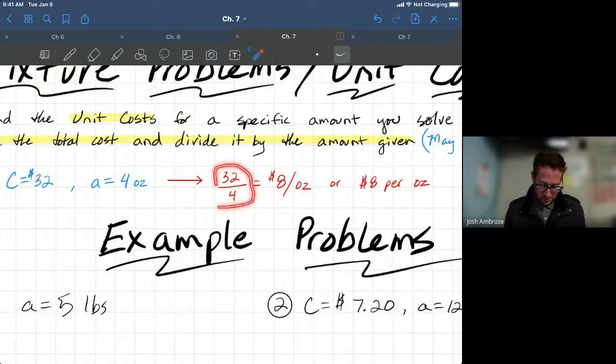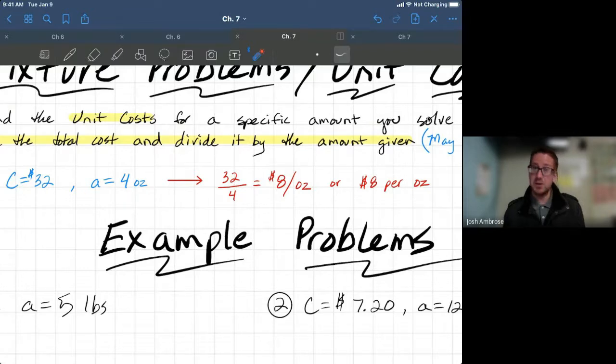There's your $32 divided by four ounces giving you a unit cost. And if you didn't know what unit cost is, that means per one unit and what are the units we're talking about here? Ounces. So, per one ounce, it's costing you $8, or $8 per ounce. That's all we're doing.